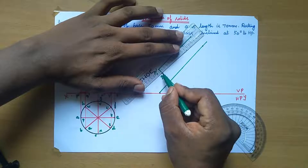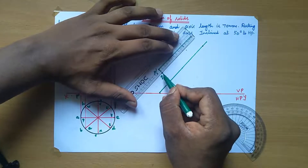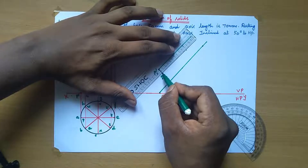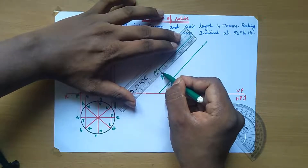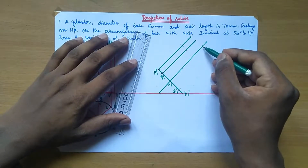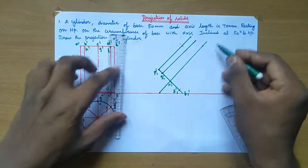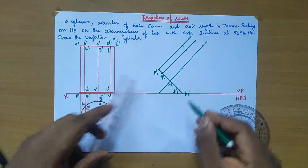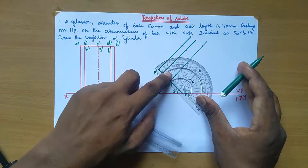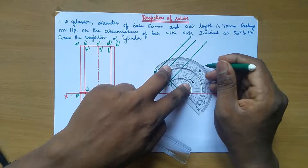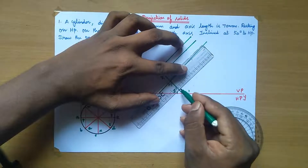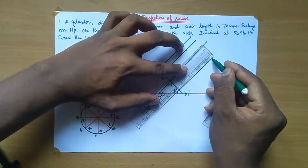With Q' as center, take 90 degrees and draw a line of 70 mm — the axis length of 70 mm. Again, S' — place your protractor at S' point, take 90 degrees, and draw a line of axis length 70 mm.